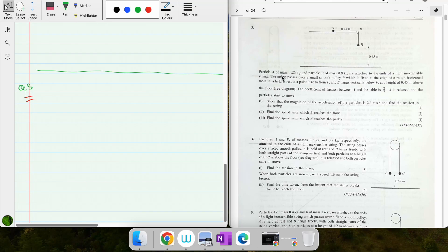Question number three says particle A of mass 1.26 kg (that's 12.6 newtons) and particle B of mass 0.9 kg (that means 9 newtons weight) are attached to the ends of a light inextensible string.